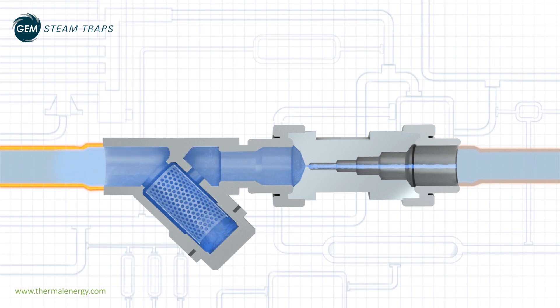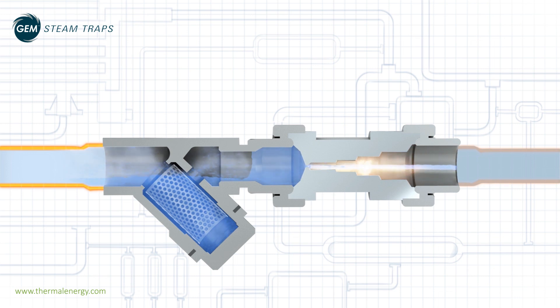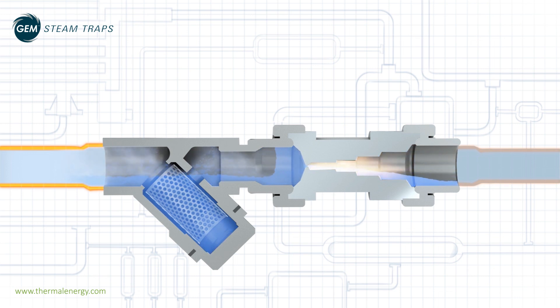As the system's temperature increases, the hot condensate passes through the orifice, moving from an area of high pressure to a lower pressure one. This causes a proportion of the condensate to re-evaporate, or flash, back to steam.